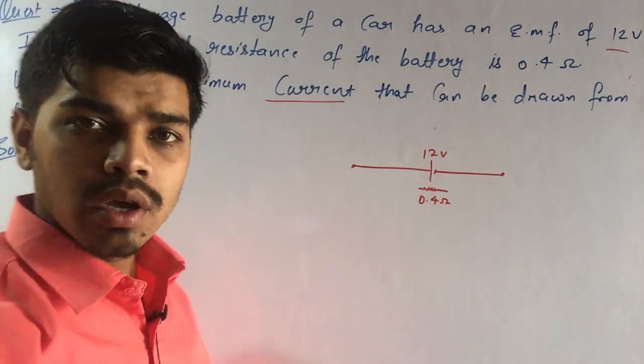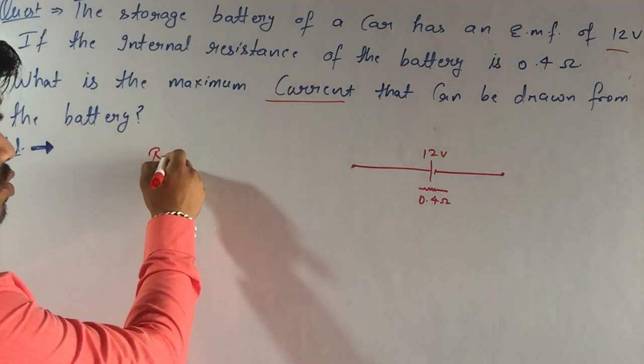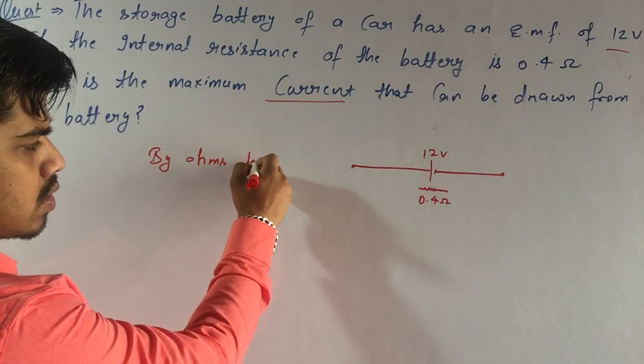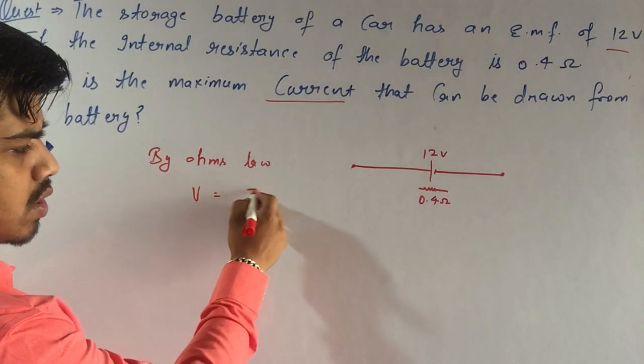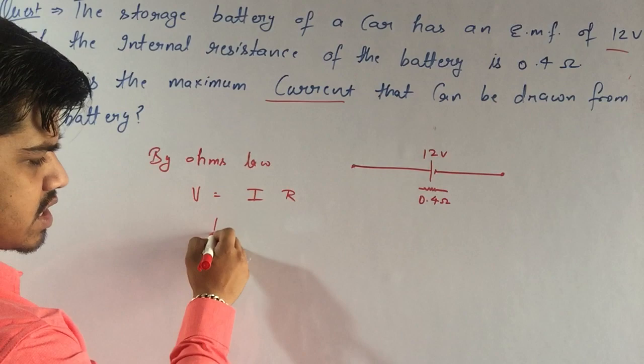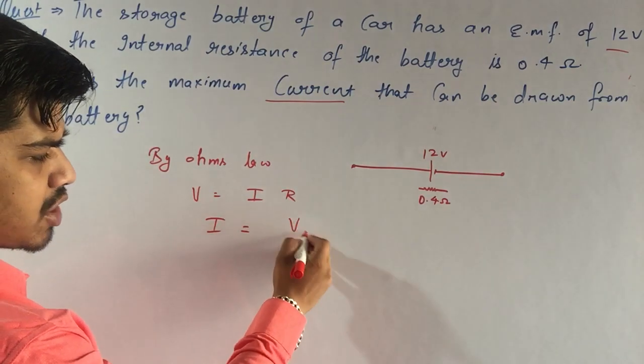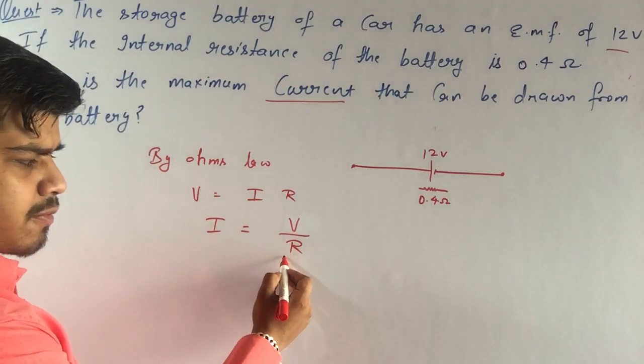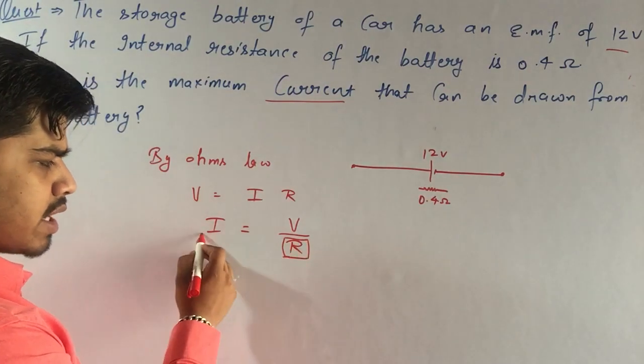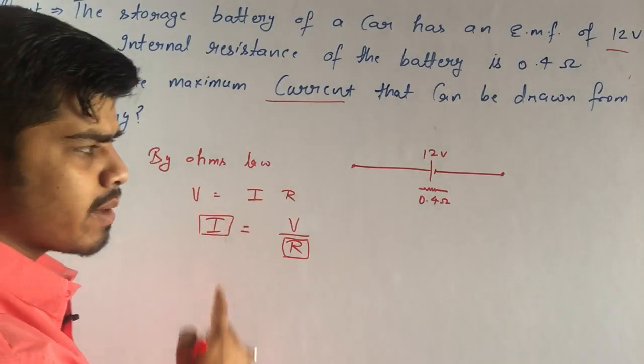Students, first of all, by Ohm's law, as we know, potential is equal to current times resistance, and current is equal to potential divided by resistance. So if resistance is minimum, then current should be maximum.